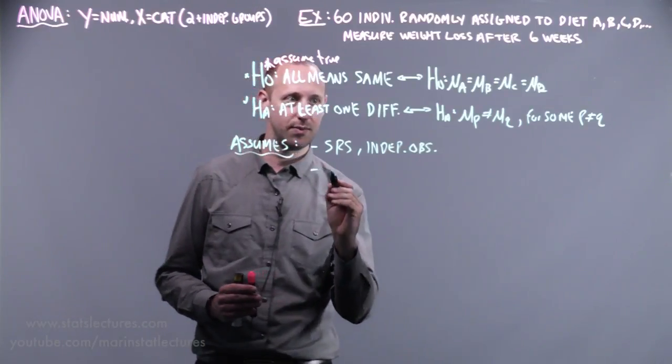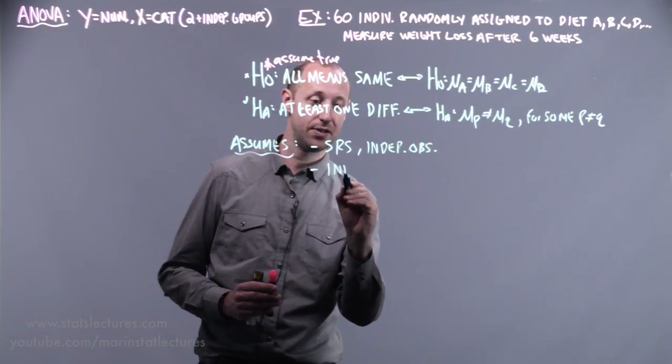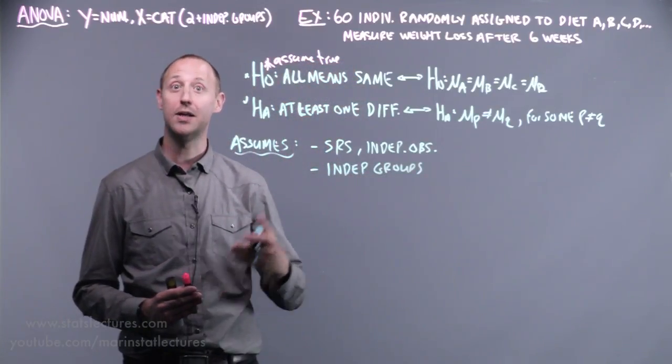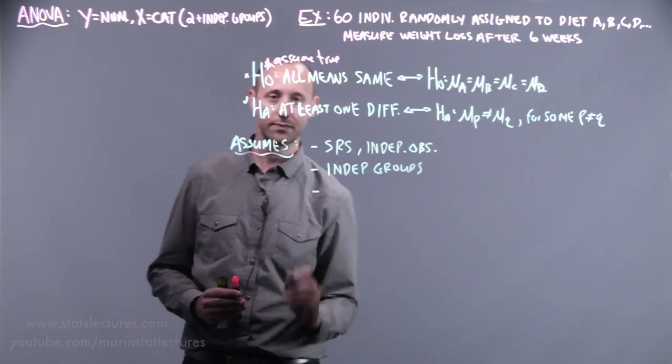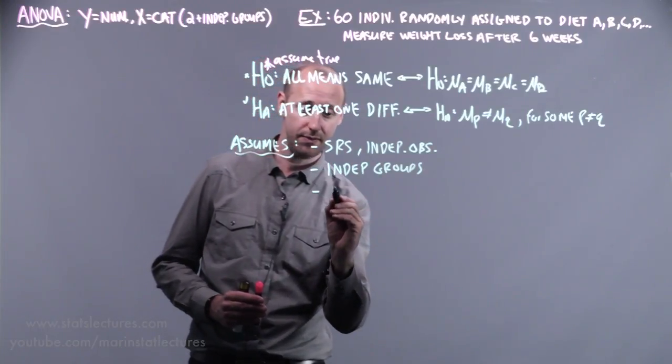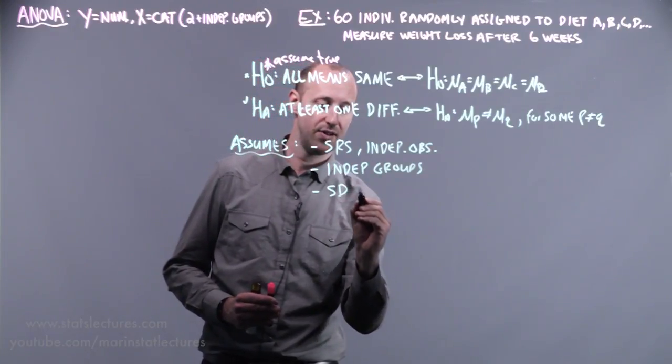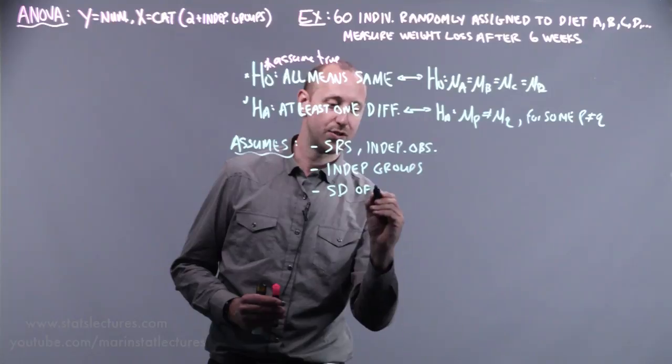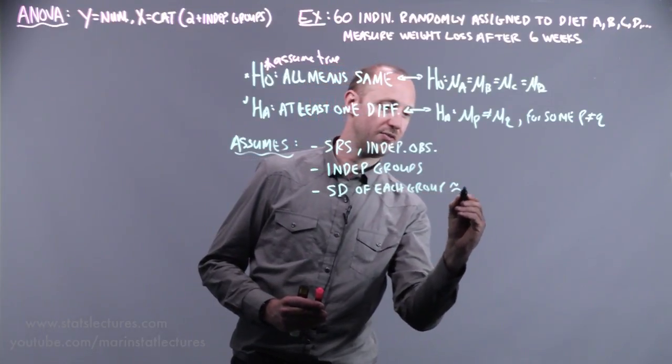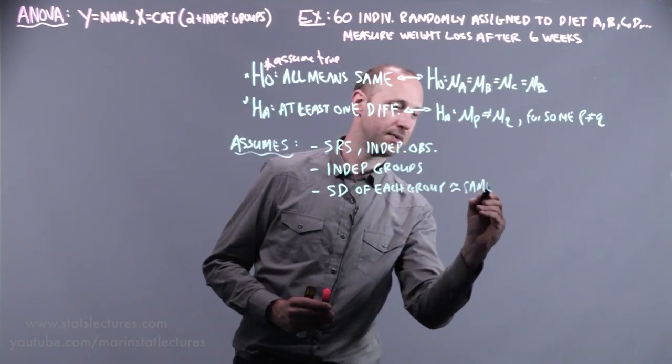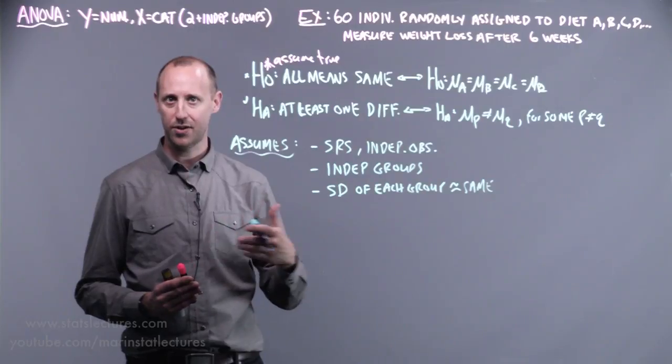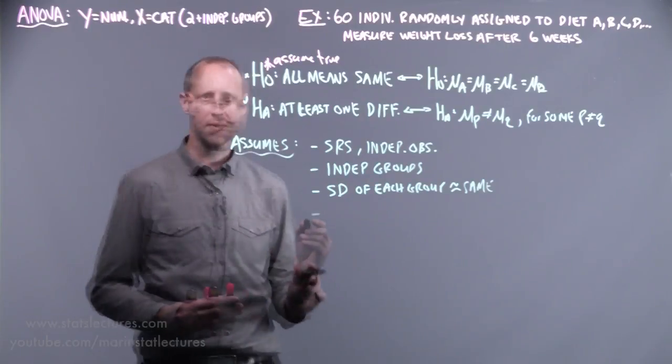We're going to assume that we also have independent groups. In this example, people on diet A are independent of the people on diet B. We have the equal standard deviations assumption, so we assume that the standard deviation of each group is roughly the same. At the population level, the variability in weight loss under these four diets is approximately the same.